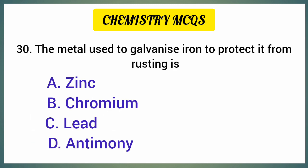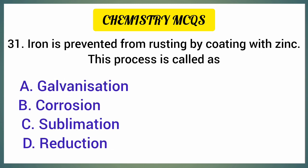The metal used to galvanize iron to protect it from rusting is — correct option is option A: Zinc. Iron is prevented from rusting by coating with zinc. This process is called — correct option is option A: Galvanization.